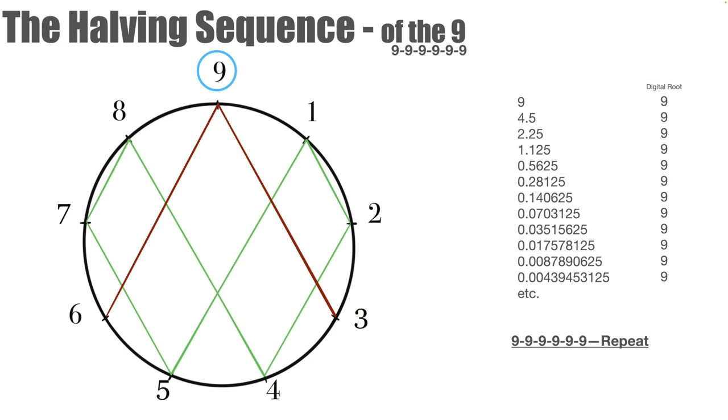Then we have the halving sequence of the nine, which is again just unique to the nine only. The digital roots of the nine's halving sequence always come up as nine.